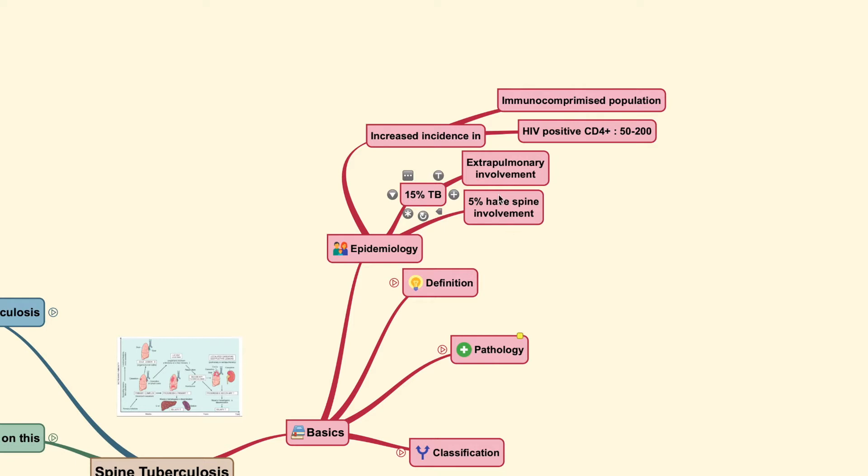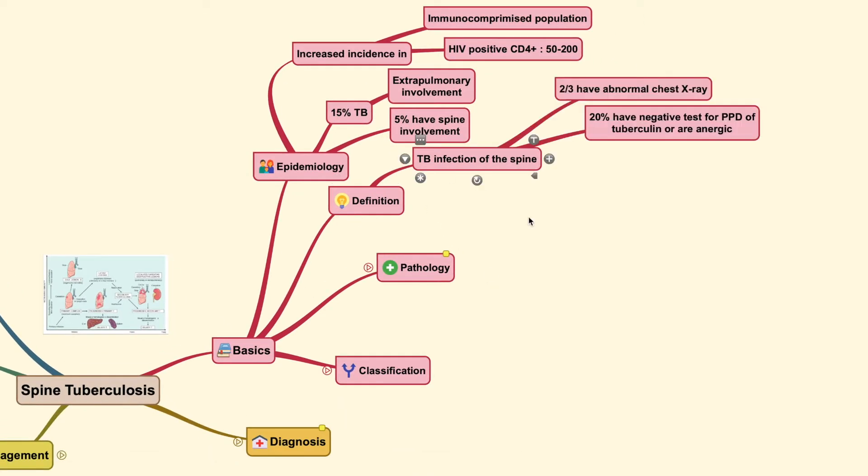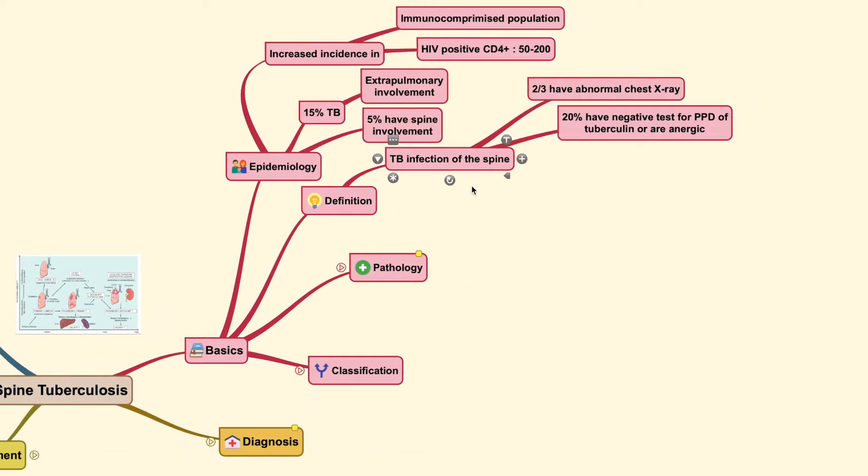And you could also say that around 15% of tuberculosis is happening at extrapulmonary region. And usually around 5% of them have spine involvement. While per definition, TB tuberculosis infection of the spine, they usually only have around two-thirds of them only have abnormal chest x-ray and 20% of them have negative tests for PPD of tuberculin or even anergic. We will discuss this type of test later on on the next part of the video.